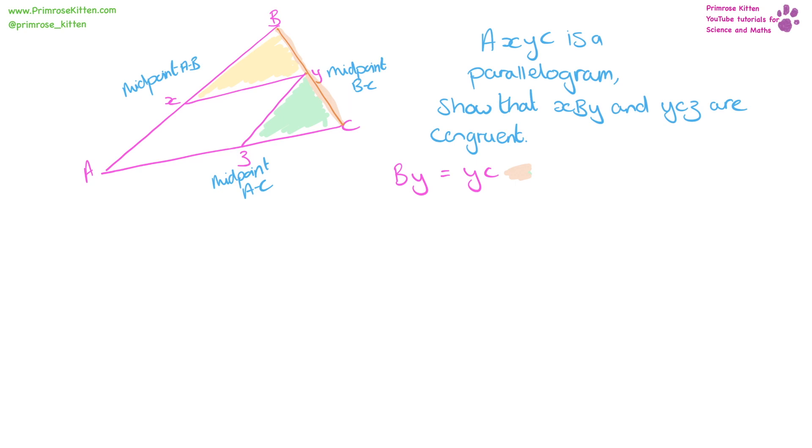The other thing we know that's the same, because X is the midpoint, we can say that BX is equal to XA. So again I'm going to get a color and color that in. So we've got that one is the same as that one.